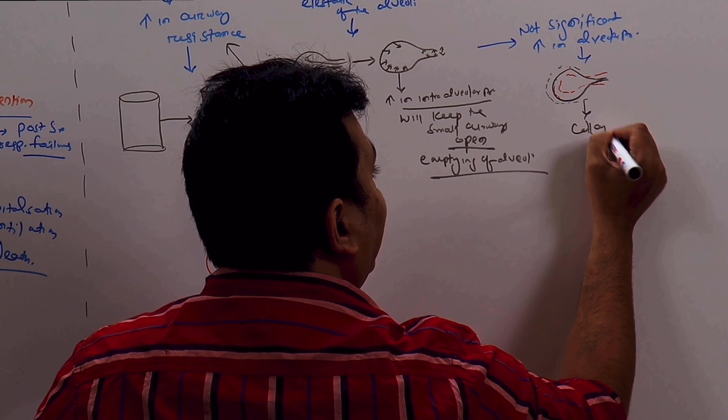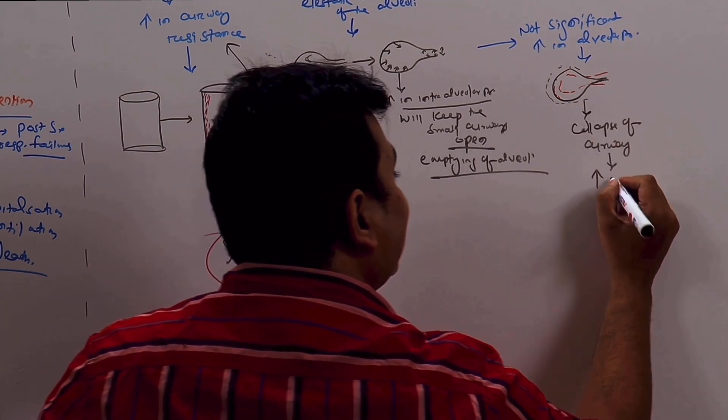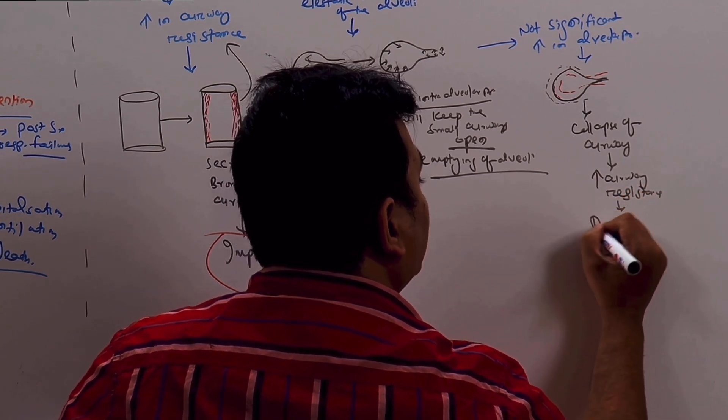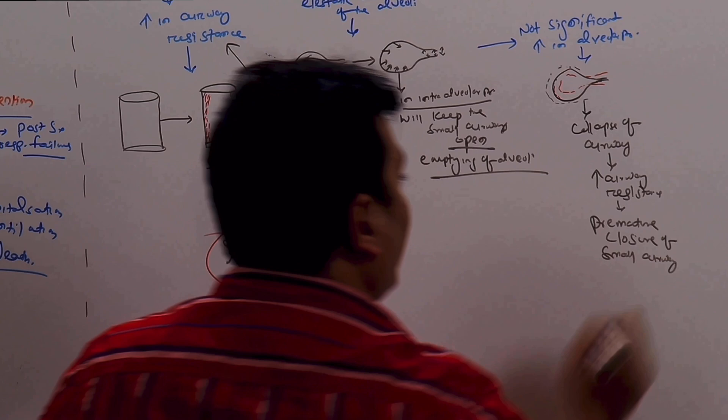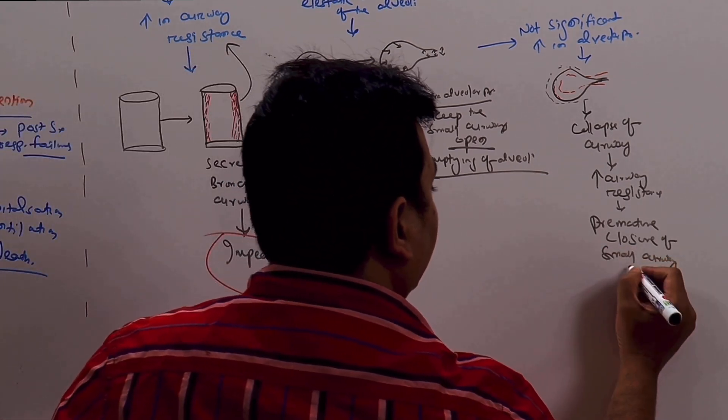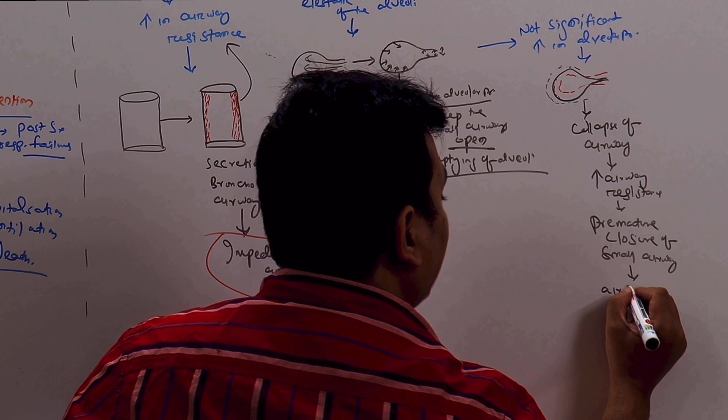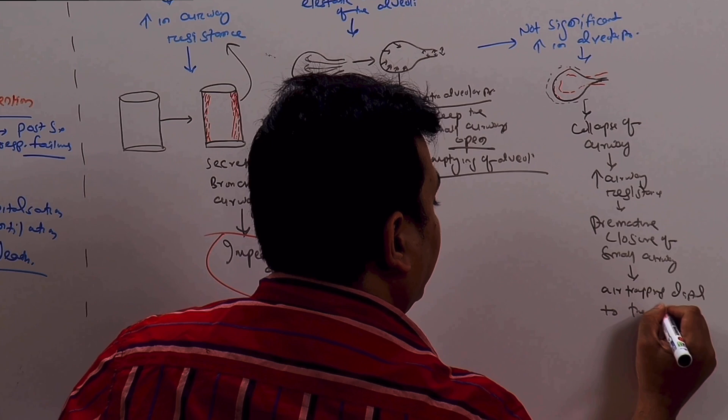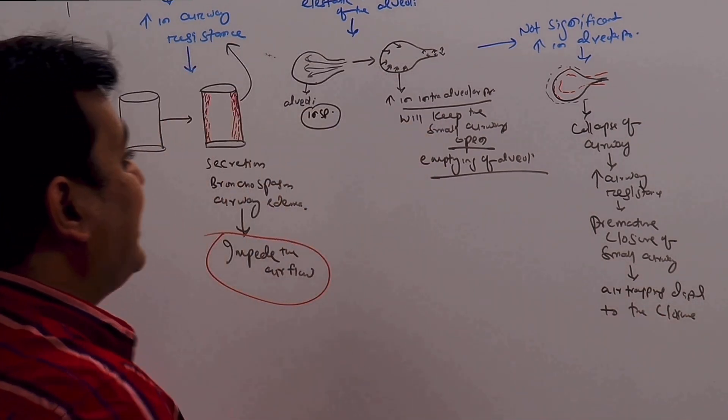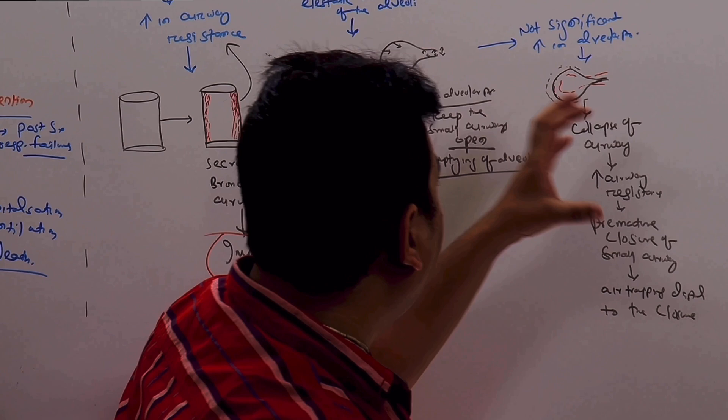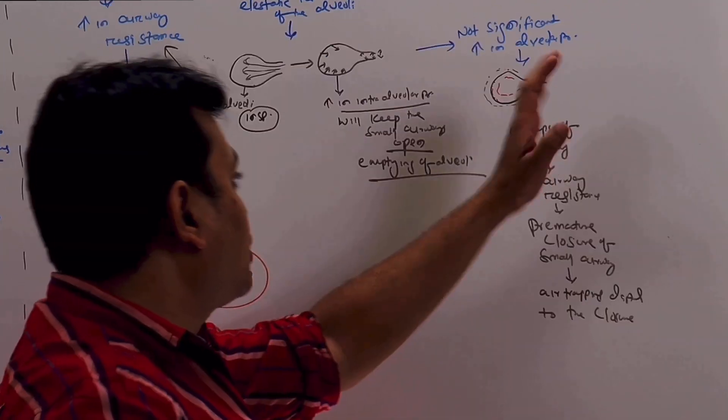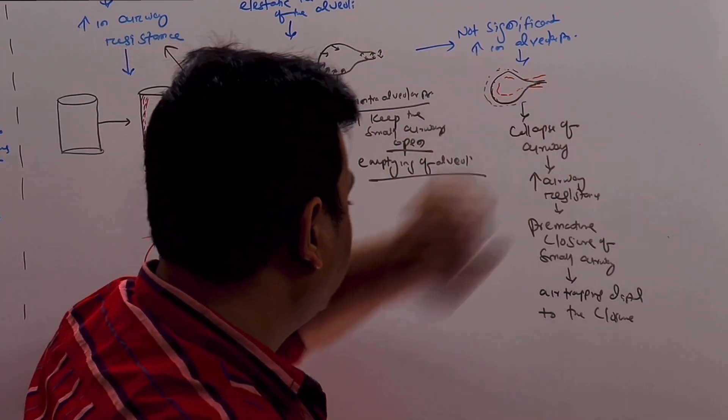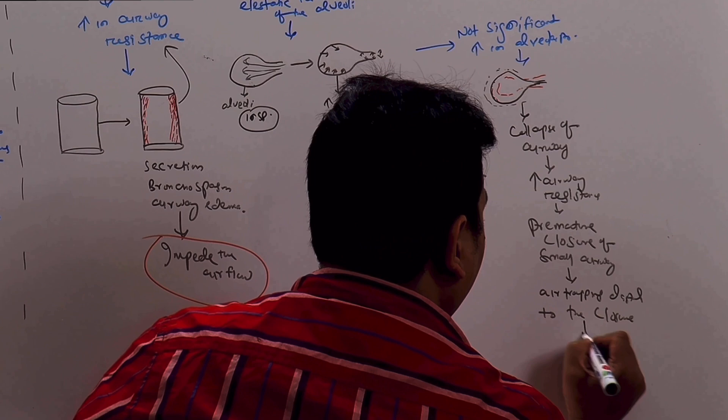So there is collapse of the airway, because of collapse there is increased airway resistance, small airway resistance. There is premature closure of small airways. What happens because of that? There is air trapping distal to the closure. Even the flow is interrupted. So there is a flow going in the expiration to empty the alveoli. Suddenly this small airway collapses. So there is accumulation of air or trapping of air distal to the point of collapse. So this leads to hyperinflation of the lung.